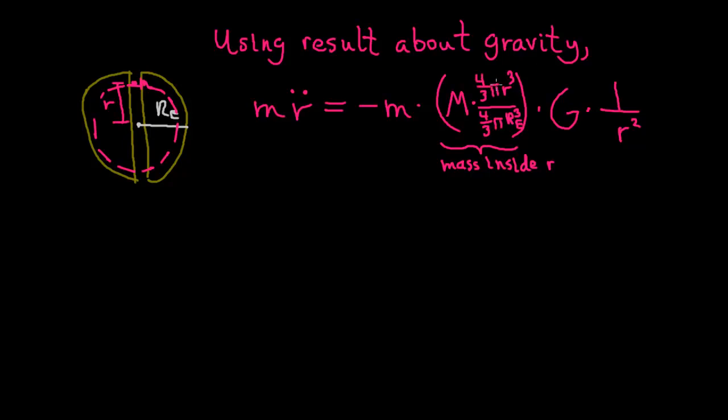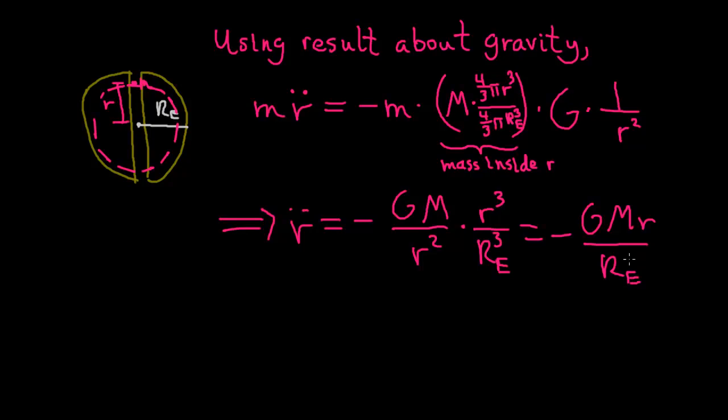The volume of a sphere is 4/3 π r³. So when we divide, these guys cancel, and we're left with, also cancelling the m's, r̈ = -GM/r² times, these cancel and we're left with, r³/R_E³. And this is of course just canceling these factors of r, -GMr/R_E³.